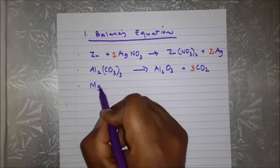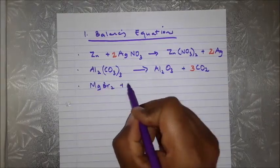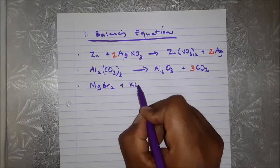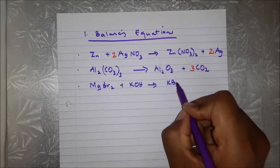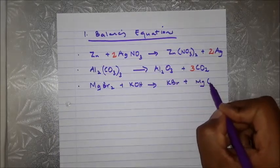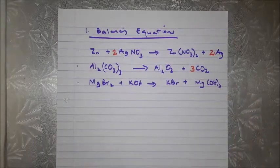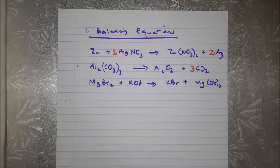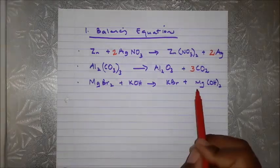The third equation is MgBr₂ + KOH → KBr + Mg(OH)₂. In this case we do not have any standalone single element, so we dive right in. Magnesium: one on each side — done.